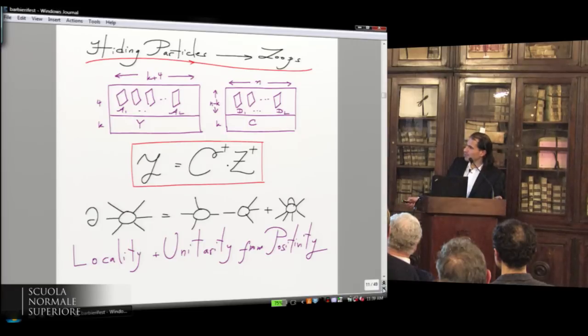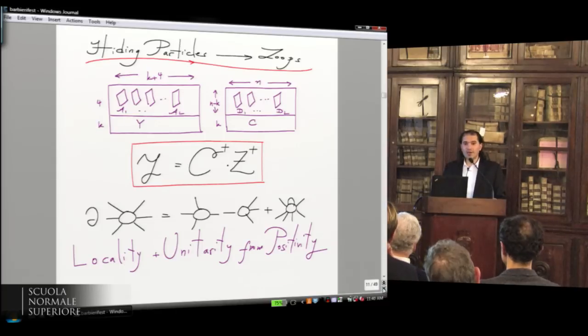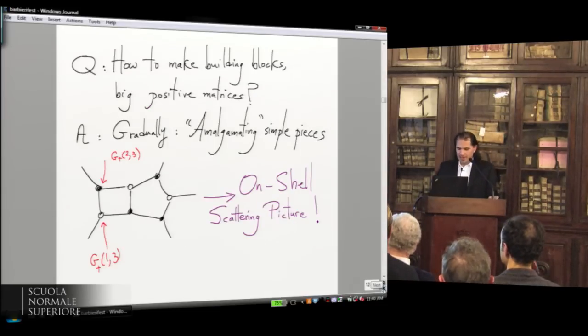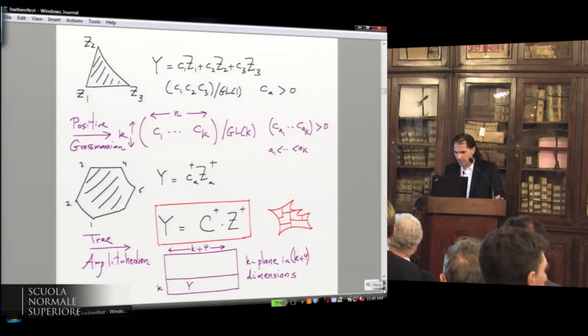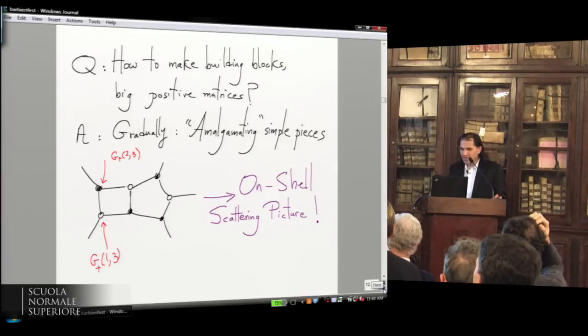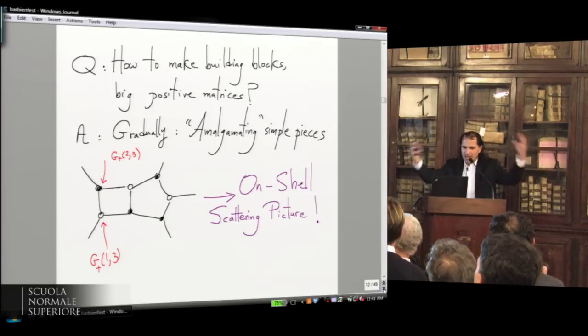When you understand what to mean by the volume of the space, the volume of the space are all the tree amplitudes in this theory. There's no Lagrangian, no path integral, no nothing. You just have this simple generalization of the polygon. Its volume computes all tree amplitudes. What are loop corrections? In a very specific sense, loops arise from hiding particles in this picture.